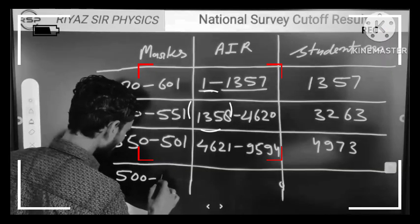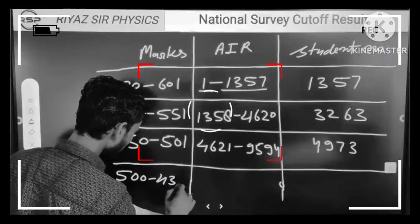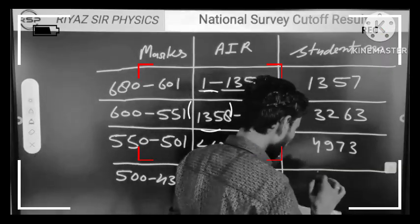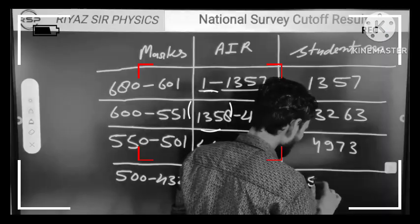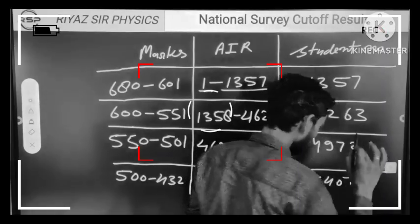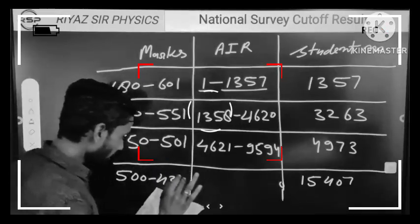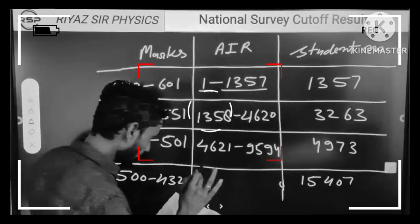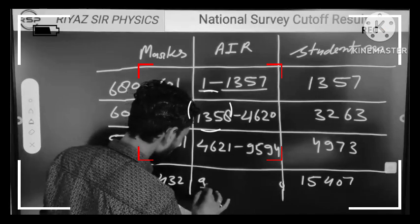Further, we have seen that when we saw the students at 500 to 432 marks, we got 15,407. This means your rank should be between 500 to 432 marks, 9595 to 25,000. Now you must have understood - this is the mark range and this is how many students we have got here.